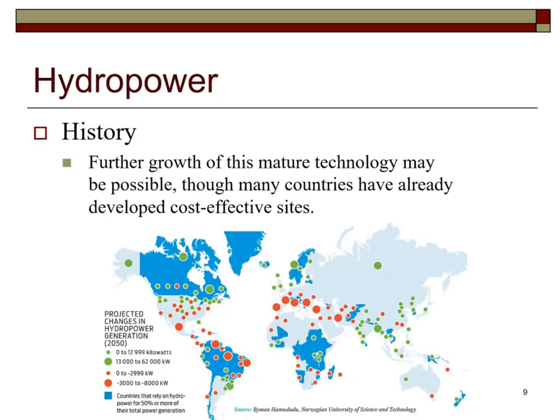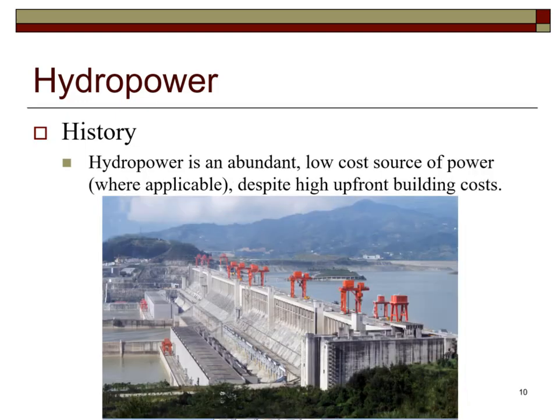There appears to be potential for future growth in hydroelectric on a global basis. This is a photo of the Three Gorges Dam on the Yangtze River in China, one of the world's largest hydroelectric dam facilities. Hydroelectric is a very low cost source of power; however, the upfront costs are high.